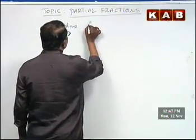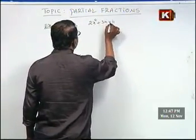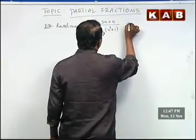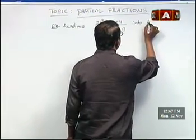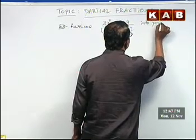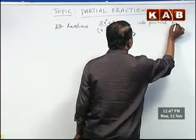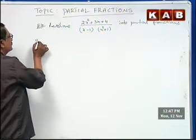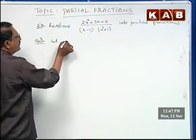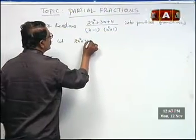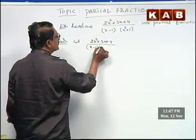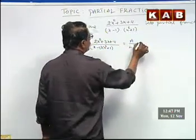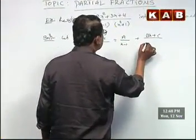Next, resolve 2x square plus 3x plus 4 by x minus 1 into x square plus 1 into partial fractions. The given proper fraction 2x square plus 3x plus 4 by x minus 1 into x square plus 1 equals to A by x minus 1 plus Bx plus C by x square plus 1.